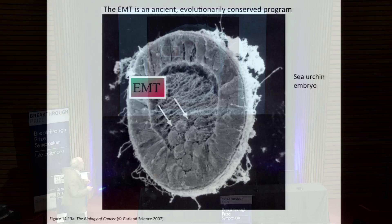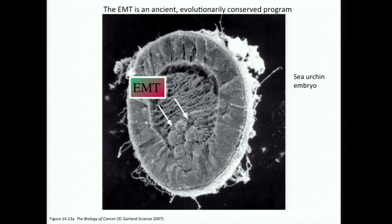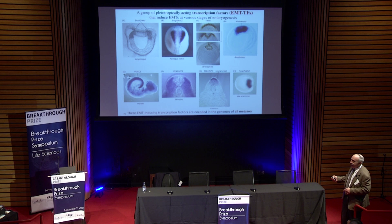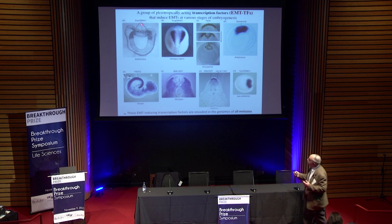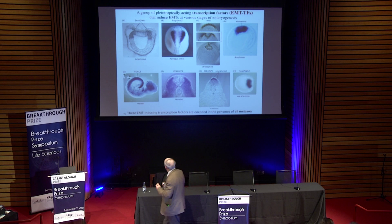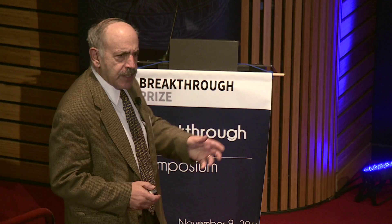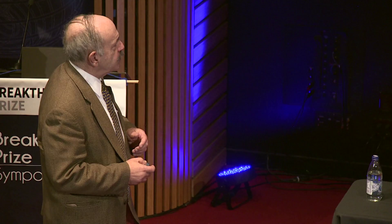The EMT program is of ancient lineage. Here we see a sea urchin embryo in which a blastula is already activating the EMT program in anticipation of forming the endoderm and the mesoderm. There are a series of transcription factors which are master regulators that orchestrate the EMT program in a whole variety of different species. All of these master regulators of the EMT program are present in the genomes of all complex metazoa, indicating they were already evolved 600 million years ago, before the metazoan radiation, and have been highly conserved in the intervening 600 million years.